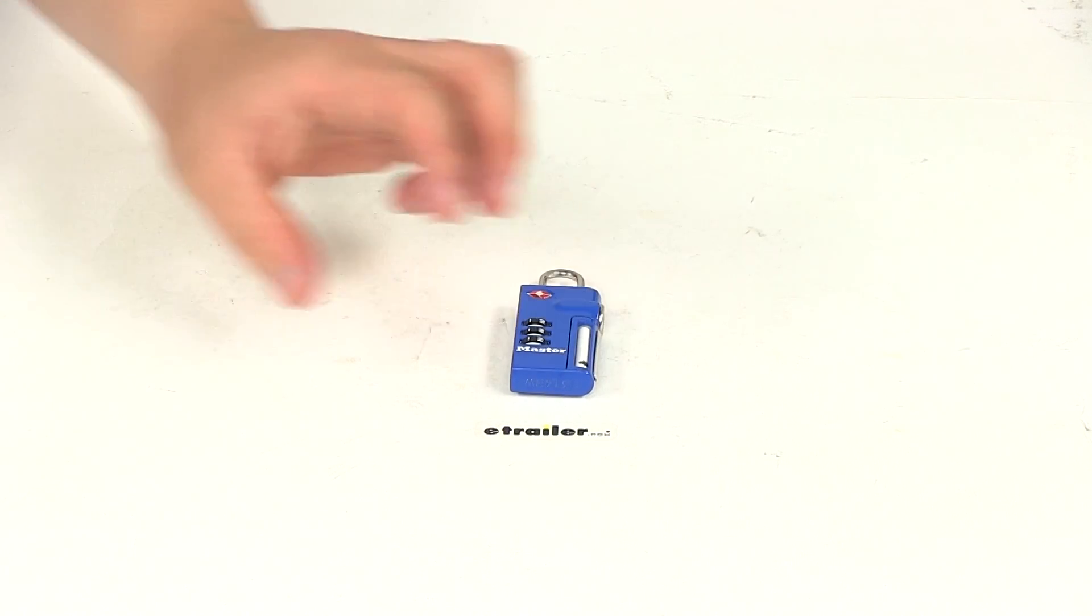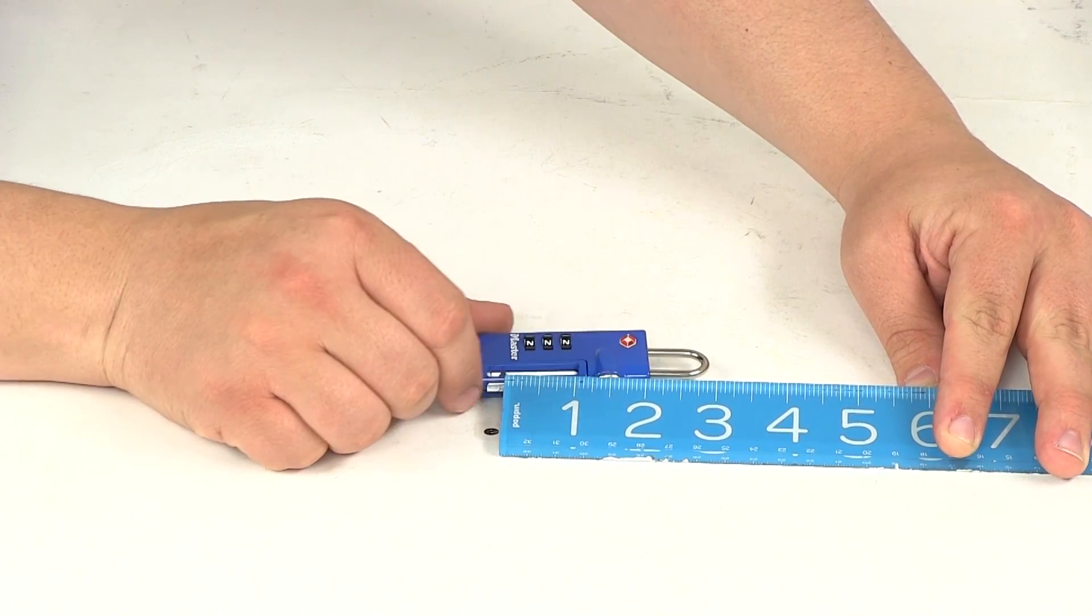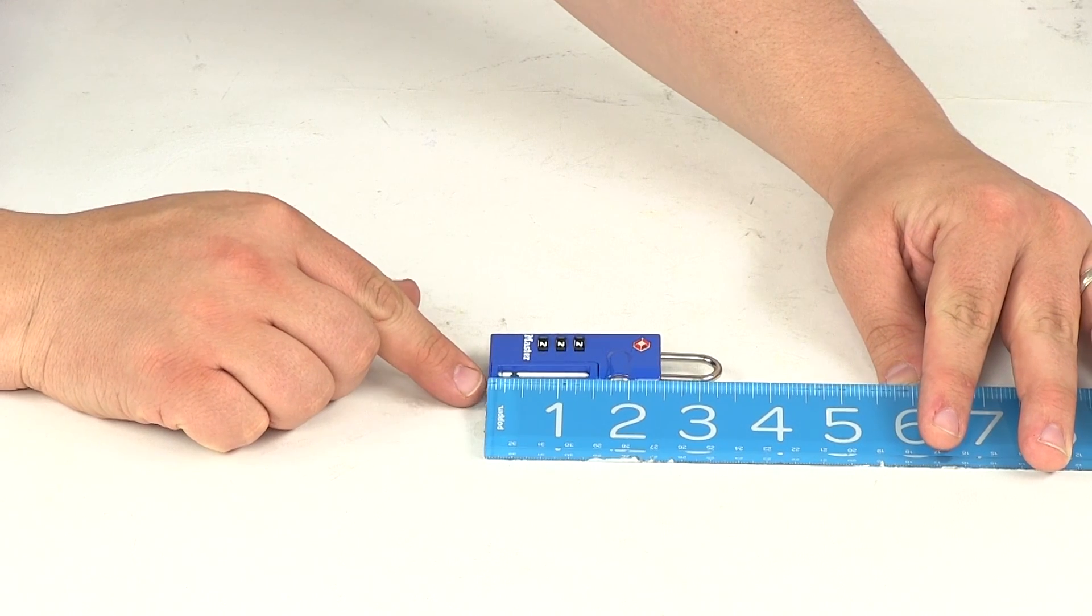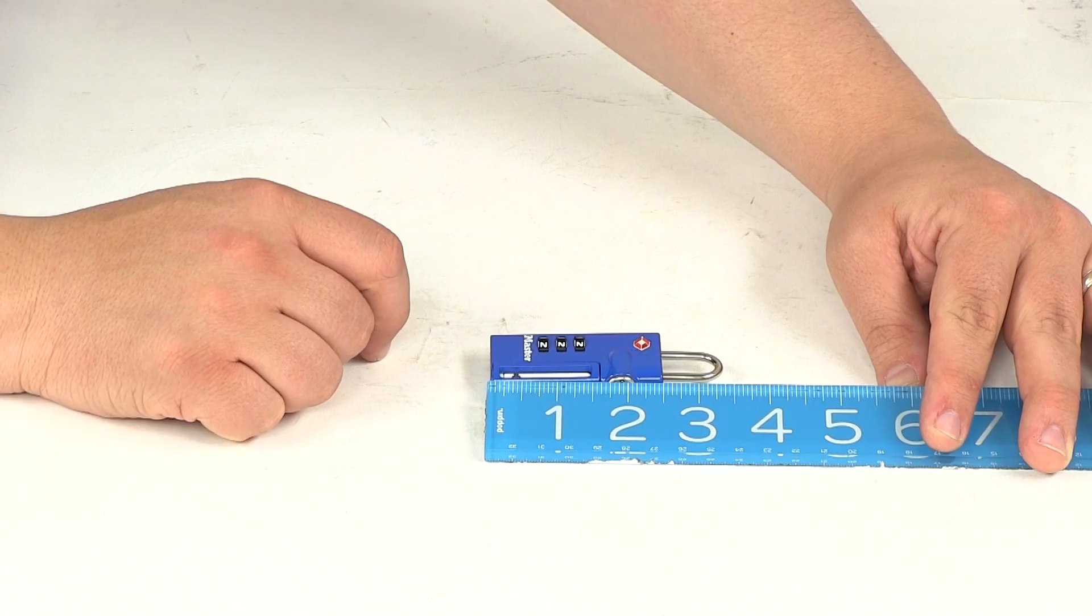We'll go ahead and take a measurement of the lock body. Going in this direction, it's going to measure an inch and a quarter. The length, just the body not including the shackle, two and seven sixteenths of an inch. And then the thickness is going to be a half inch.